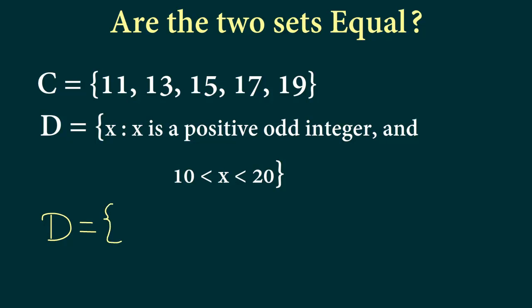So let's rewrite now D. So the set D is defined as it contains element X. X is a positive odd integer and X lies in this range. So between 10 and 20 what are integers? So 11, 12, 13, 14, 15, 16, 17, 18, 19. Those are the integers between 10 and 20. So now X is a positive odd integer. So we have to write 11. Now what about 12? Can we write 12 as an element of D? We cannot because 12 is not odd. 12 is even. So 12 does not count. Then we have to write 13. Similarly 15. Then we will have 17. We will have 19. What about 21? 21 actually is more than 20. So we cannot write 21.